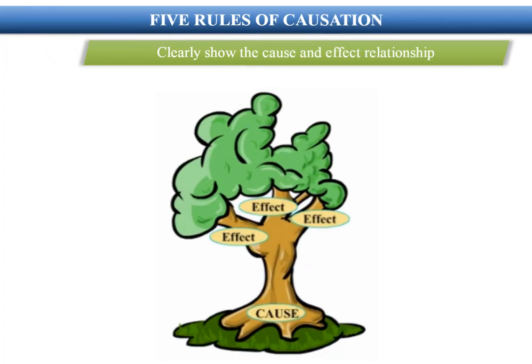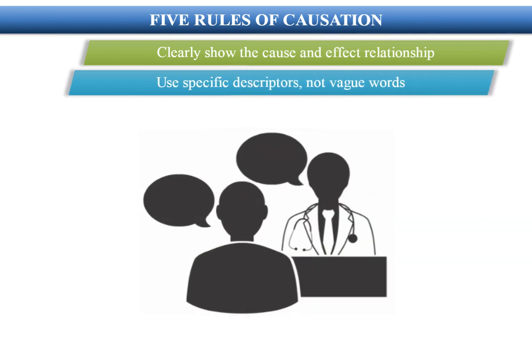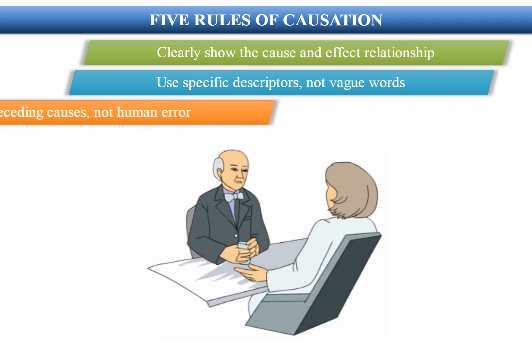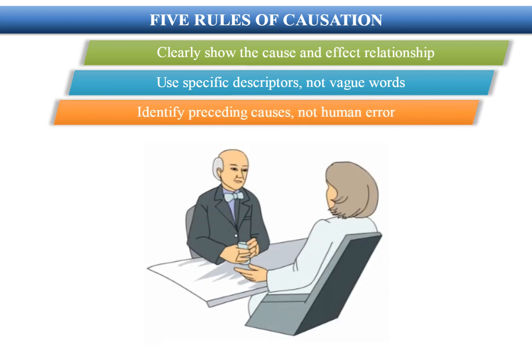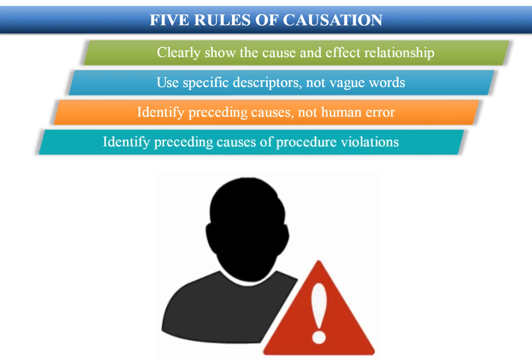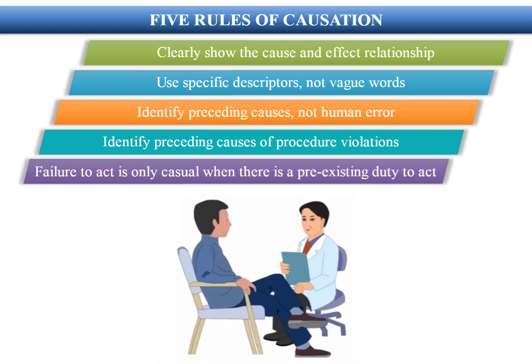The 5 Rules of Causation require that you clearly show the cause and effect relationship using specific descriptors, not vague words. You should identify preceding causes rather than human error, identify preceding causes of procedure violations, and recognize that failure to act is only causal when there is a pre-existing duty to act.